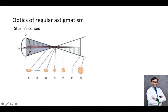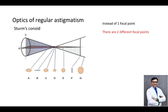Basically, this circle and its light rays depicted here represent Sturm's conoid. Sturm's conoid is an optical principle where, instead of one focal point, there are two different focal points in different meridians. There is one focal point of the horizontal meridian and one focal point of the vertical meridian, and they don't converge on the same point. This is basically Sturm's conoid.